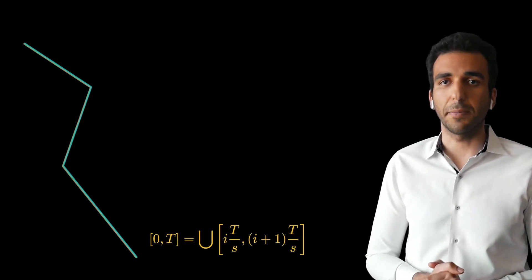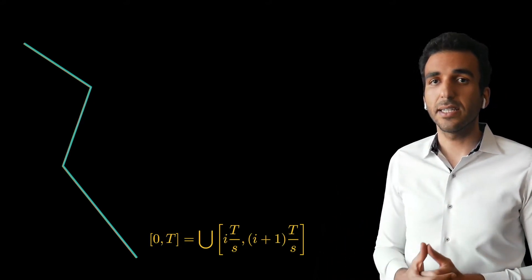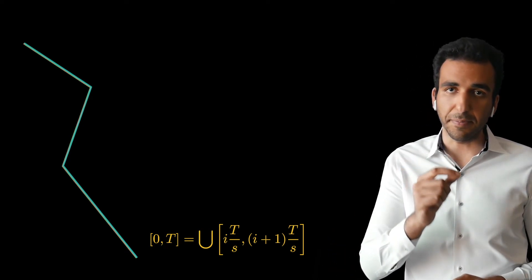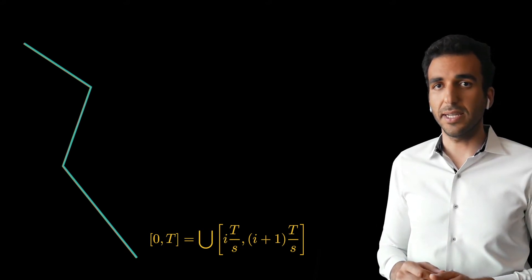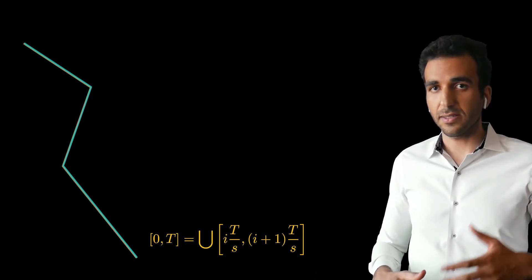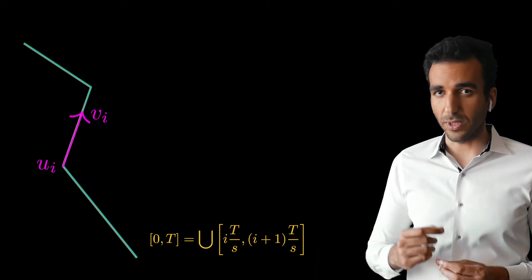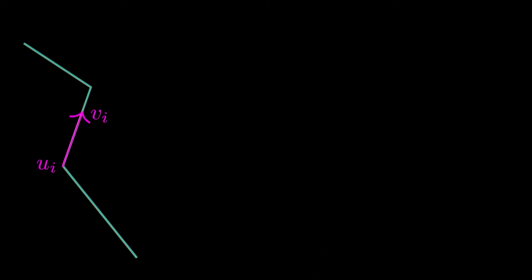The way we're going to do this is we're going to look at our time interval, zero to capital T, and split it into s pieces of equal length. Now on every piece or every sub-interval of time, the path is going to start at some point u_i and move along a constant direction with constant speed v_i. With this parameterization, the collision avoidance constraint is now given by this inequality.